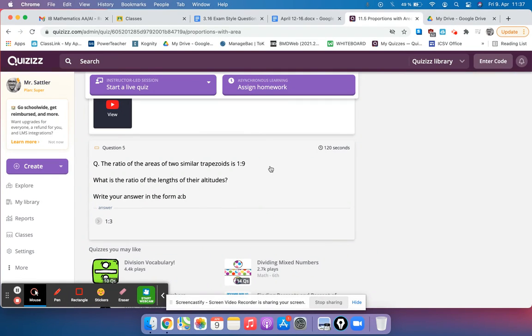Okay, if the ratio of the areas is 1 to 9, then that's the side that doesn't get squared, or the ratio that doesn't get squared. What is the ratio of the lengths of their altitudes?